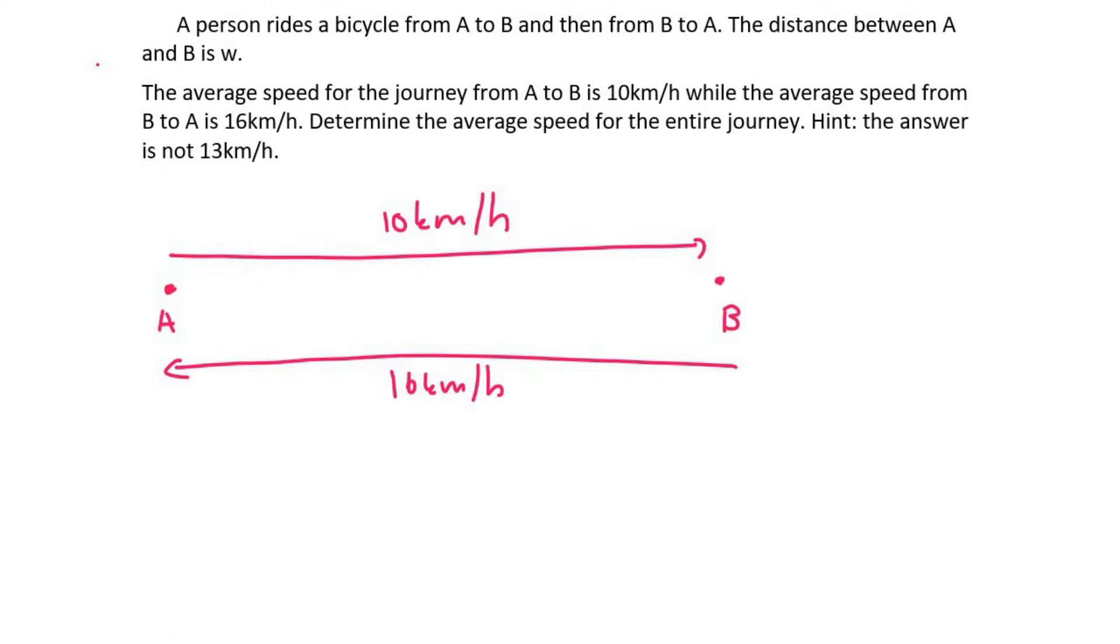Now, I know for a fact, I even thought about it like this back when I was in high school. If it's 10 kilometers going that way and 16 going that way, then isn't the average simply going to be 13? Because 13 is directly between 10 and 16.